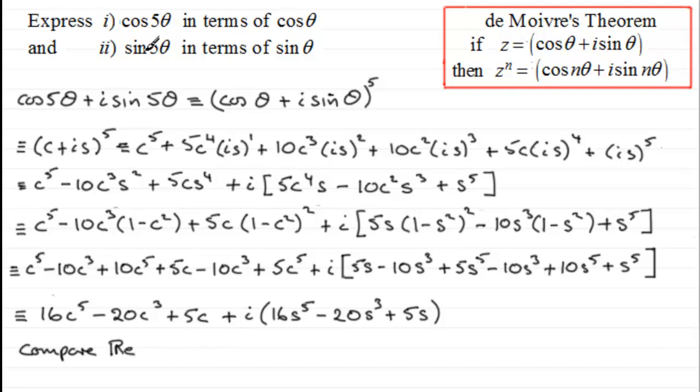Then what I have is that cos(5θ) must be identical to the real part here. So if I write this in full we've got 16·cos^5(θ) - 20·cos^3(θ) + 5·cos(θ).